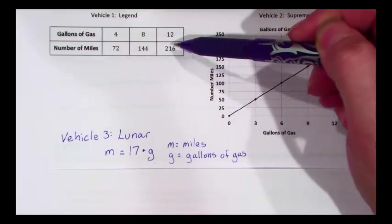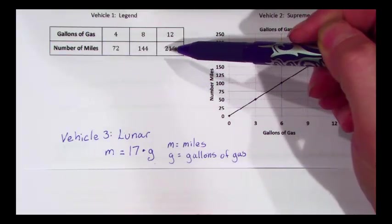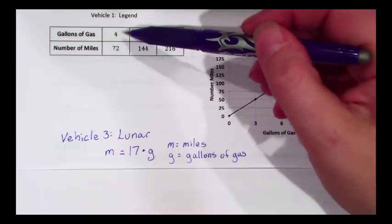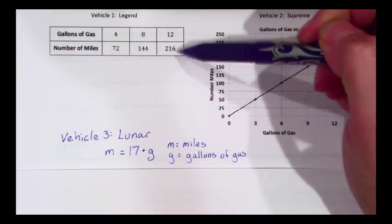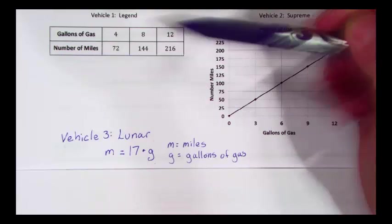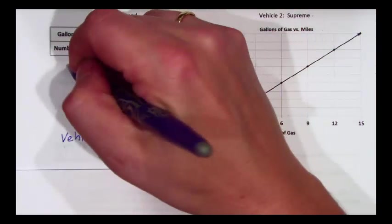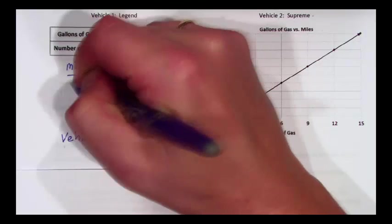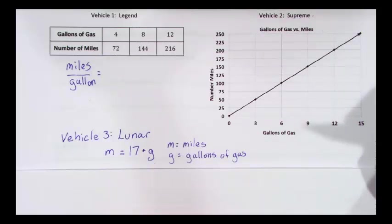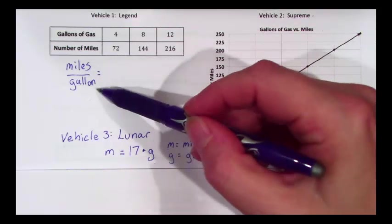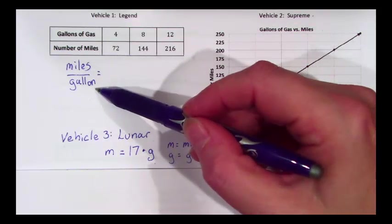When we have a table, we can find the unit rate by dividing one value by another for any particular ratio. Here, since we want to find miles per gallon, this is the way our division problem will be written: miles per gallon.